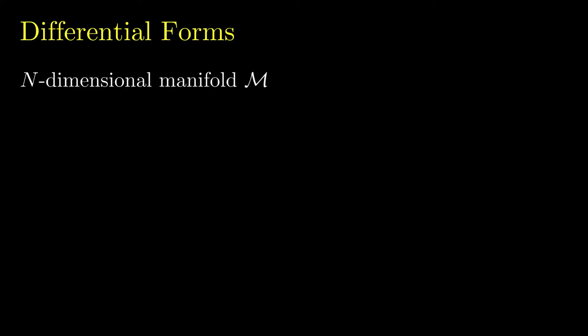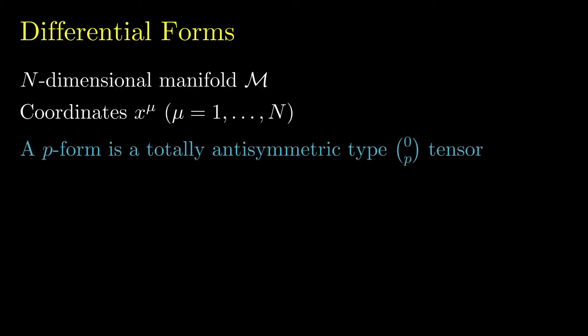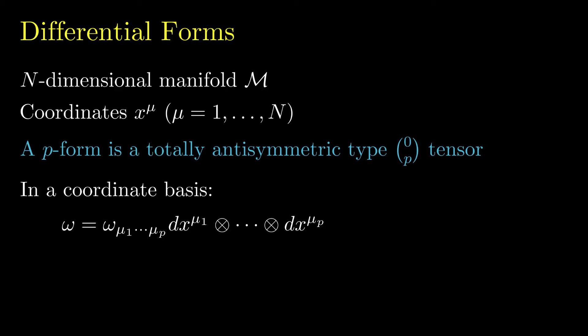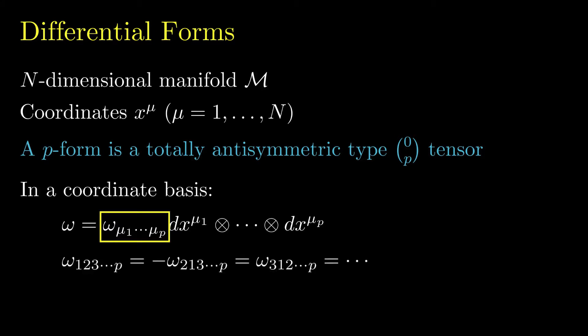We'll start by defining differential forms. Consider an n-dimensional manifold M with coordinates x-mu, where mu ranges from 1 to n. A differential form of rank p, also called a p-form, is a type (0,p) tensor that is totally anti-symmetric. In a coordinate basis, we can write a p-form omega as a linear combination of tensor products of dx-mu, where the components omega sub mu-1 through mu-p are anti-symmetric under interchange of any pair of indices. That is, the components satisfy the following relations.